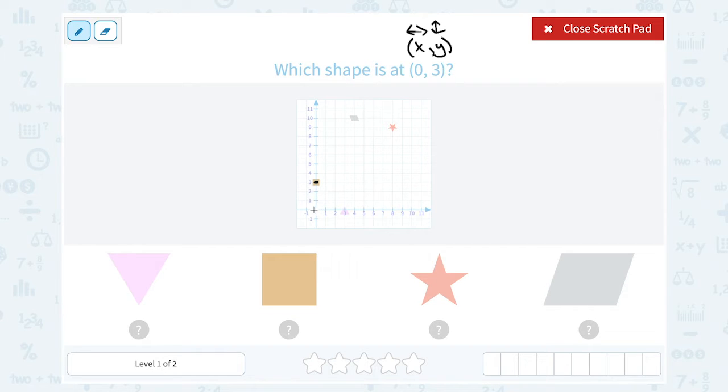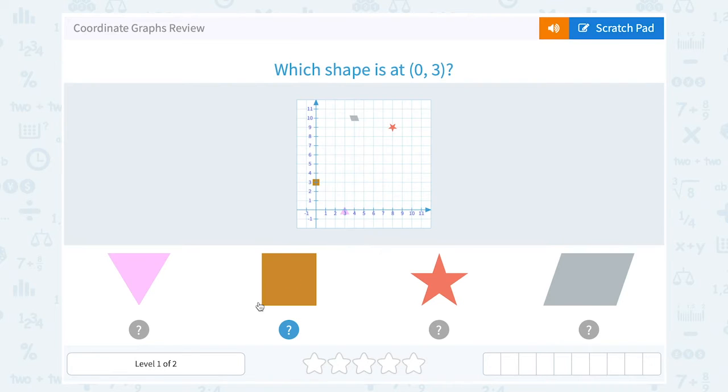So you can see, and of course we always count from (0, 0), which is where the x and y-axes cross. So from here, if we stay center, up 1, 2, 3, we're going to land right on the square.